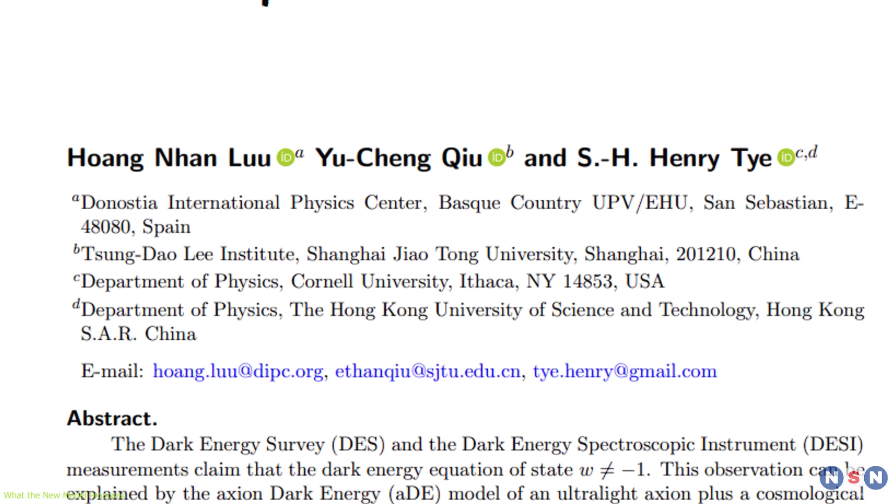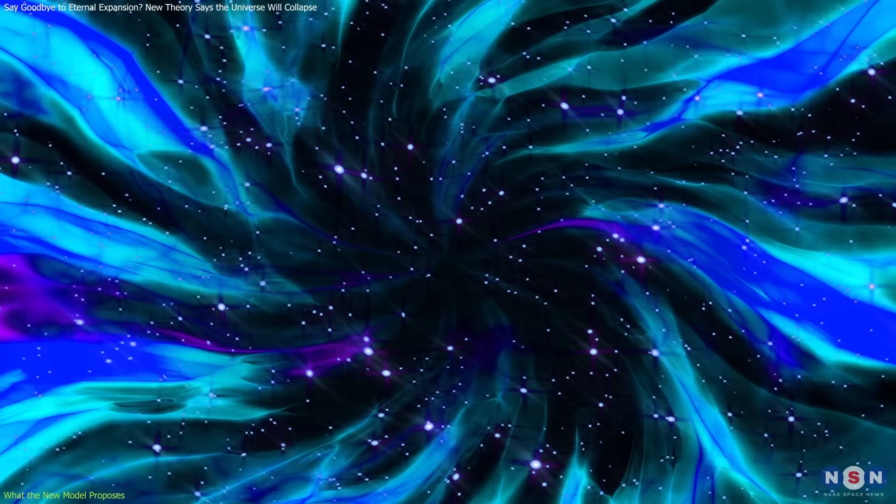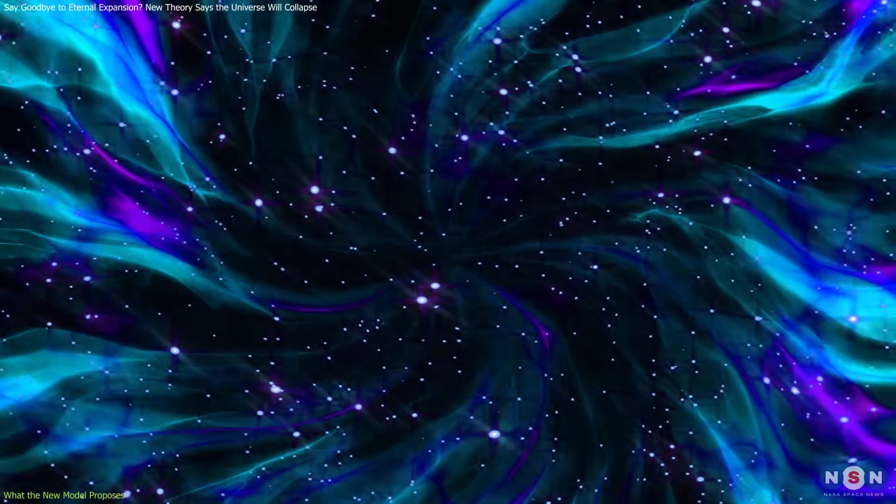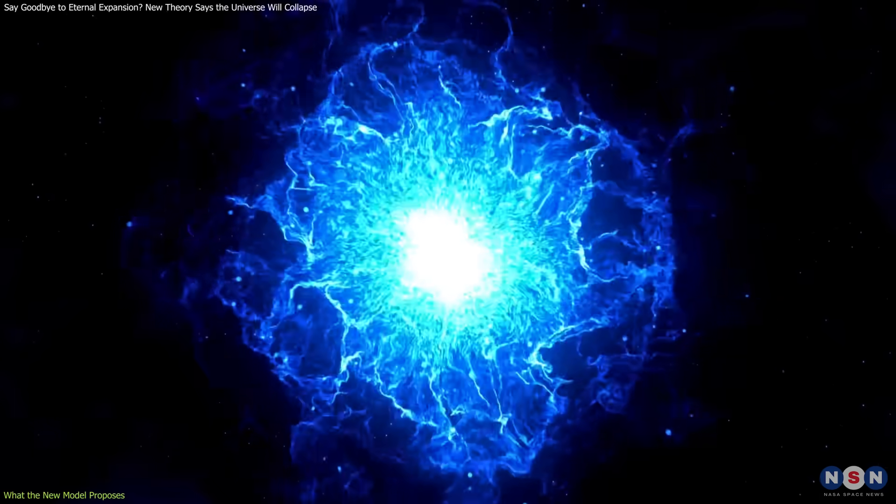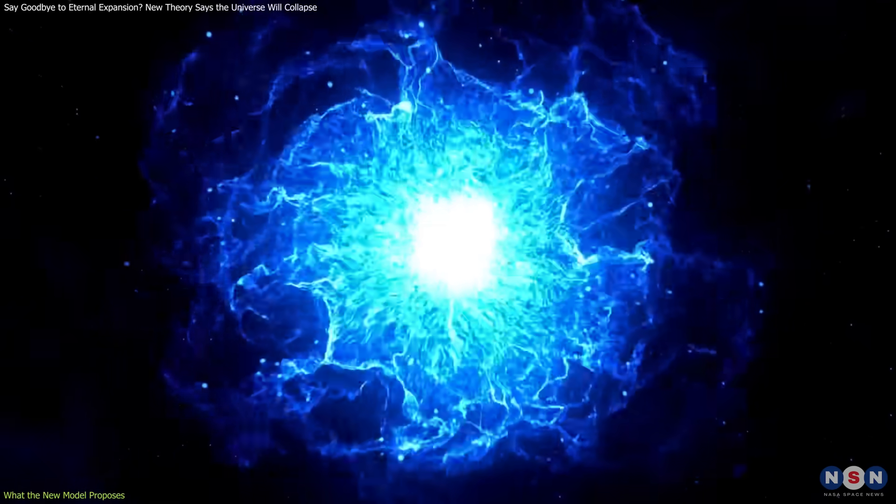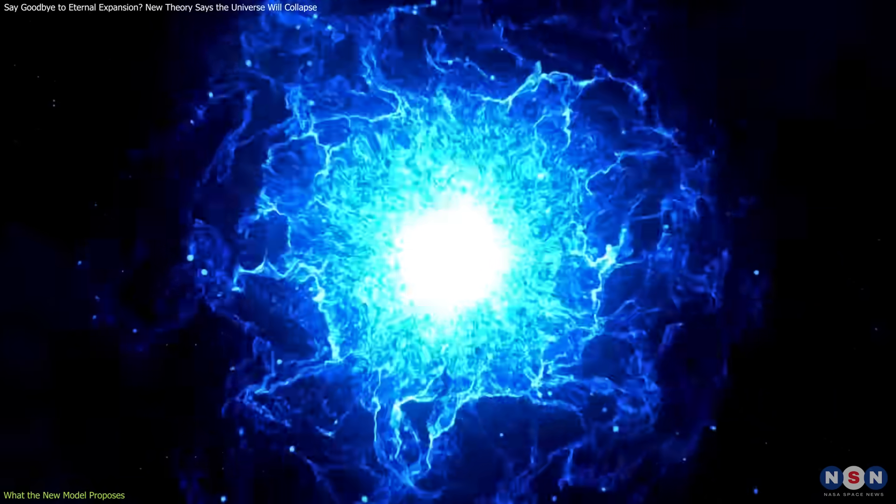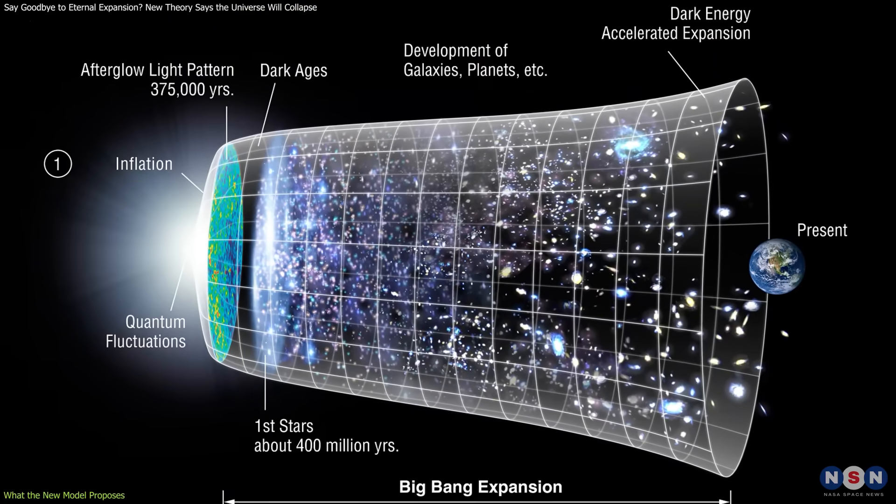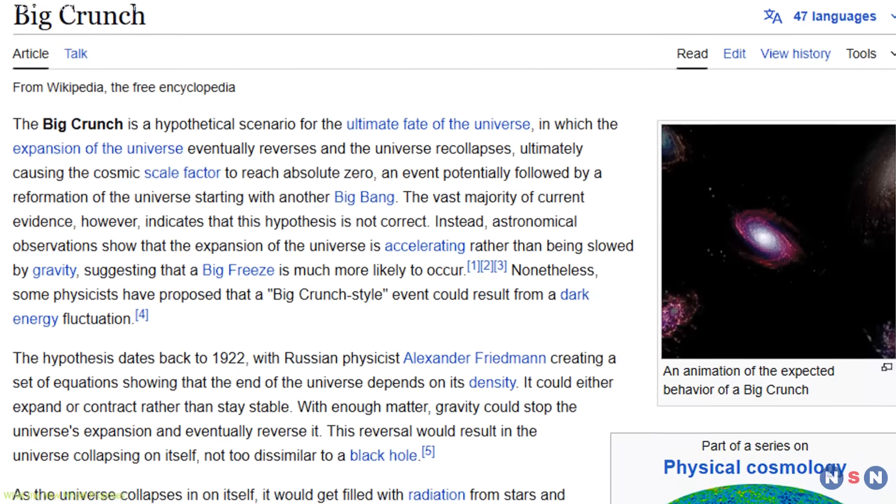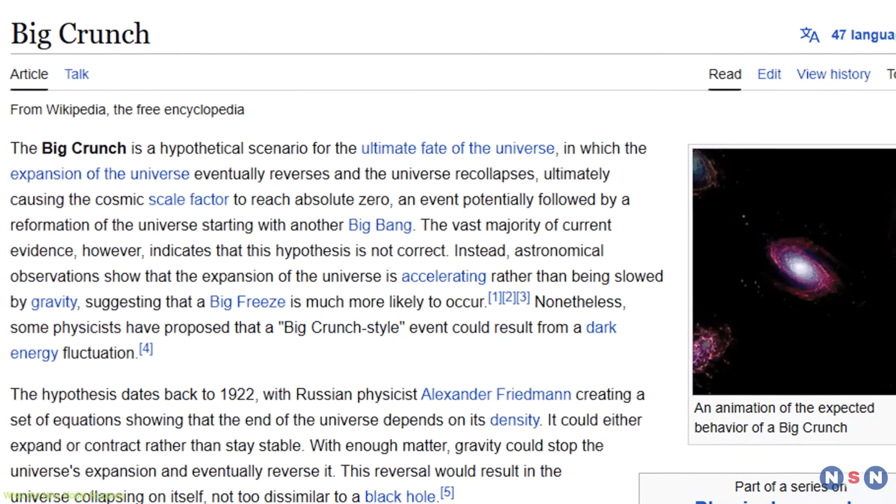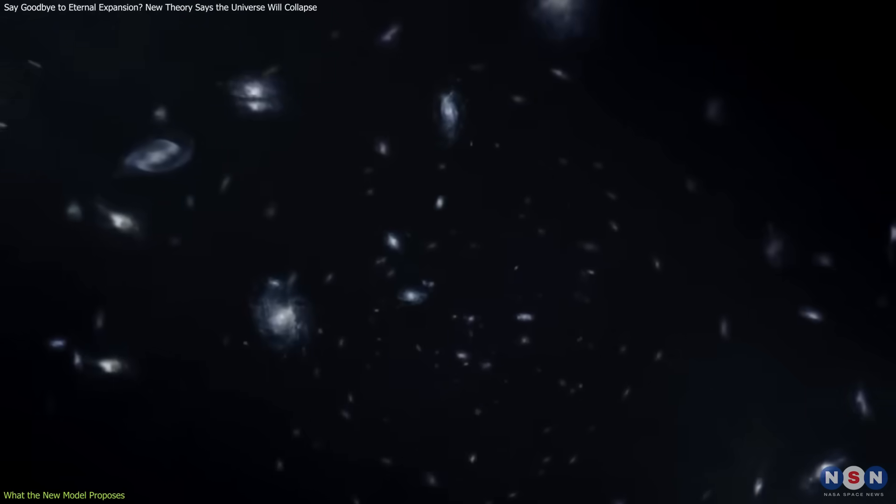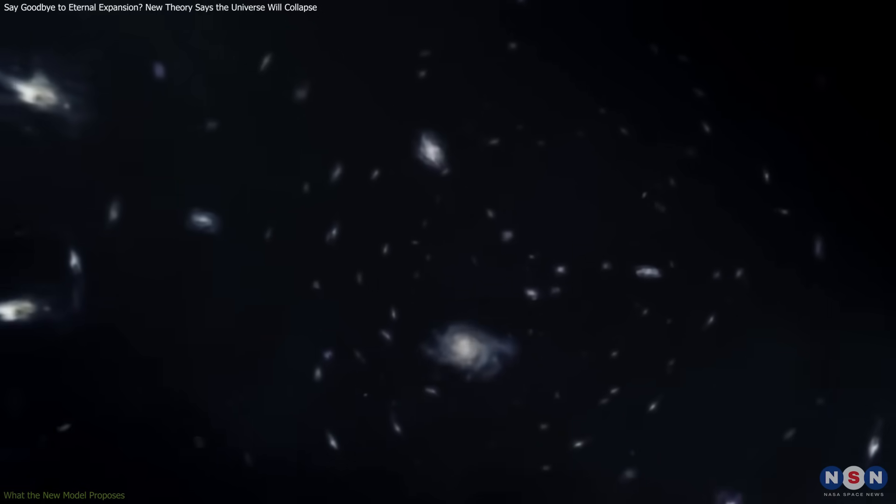The authors aren't claiming certainty. The scenario depends on whether dark energy is truly evolving, and whether the universe contains a small negative energy density, which has not yet been directly observed. Still, it's a significant departure from the standard picture. It revives an older concept, the big crunch, but grounds it in a new theoretical structure supported by recent data.